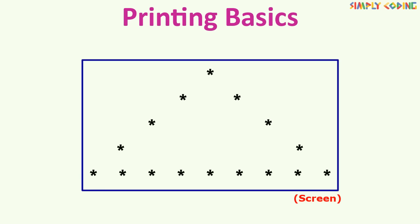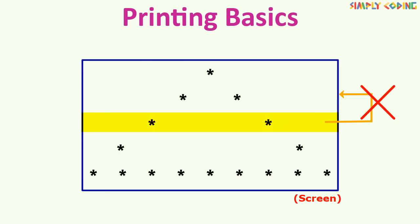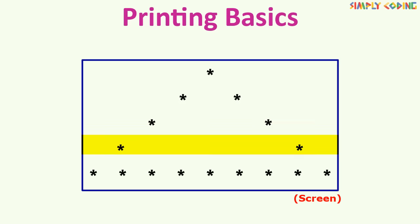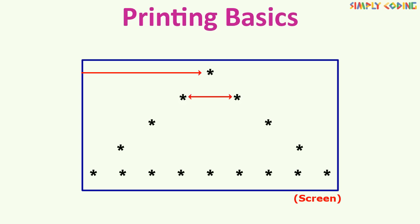We will start by understanding some printing basics. First is that we print always row by row. We cannot go back to a previous row and print. You have to print the entire row and then only move to the next row. Next is we always start printing from the left side of the screen. If your star is printed away from the left side of the screen, or if there is space in between the stars like in this hollow hill pattern here, then you do not jump and print.